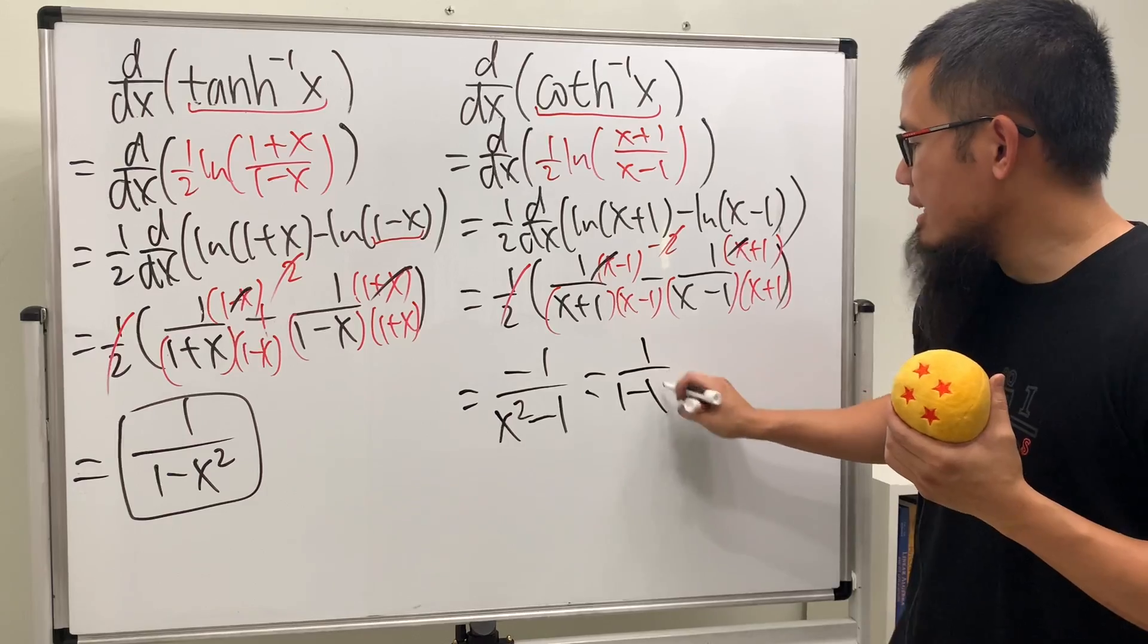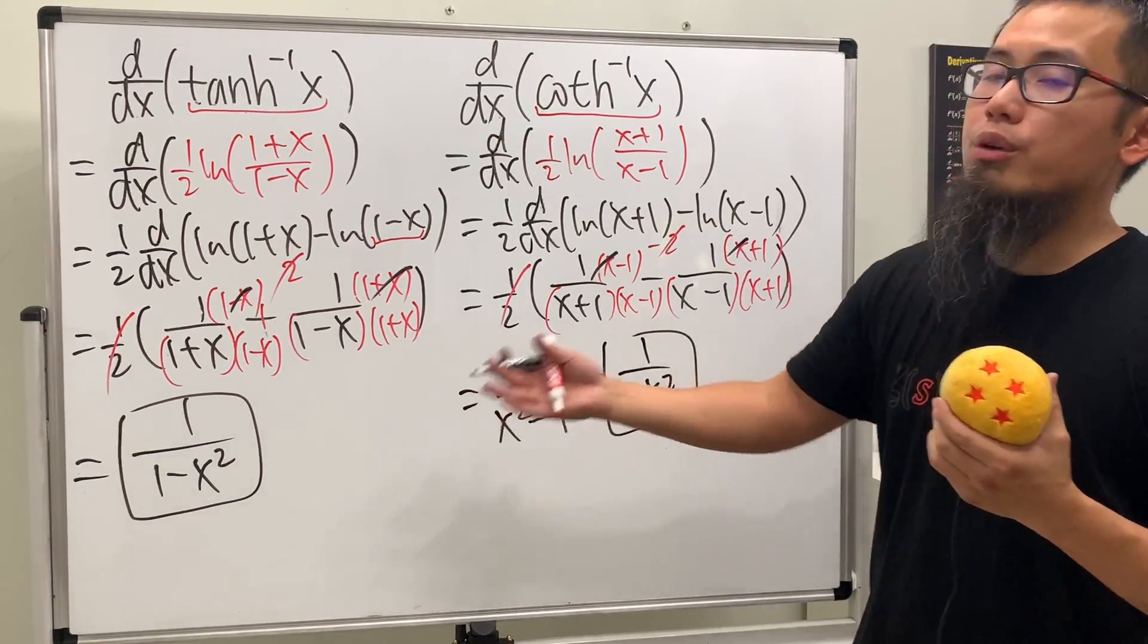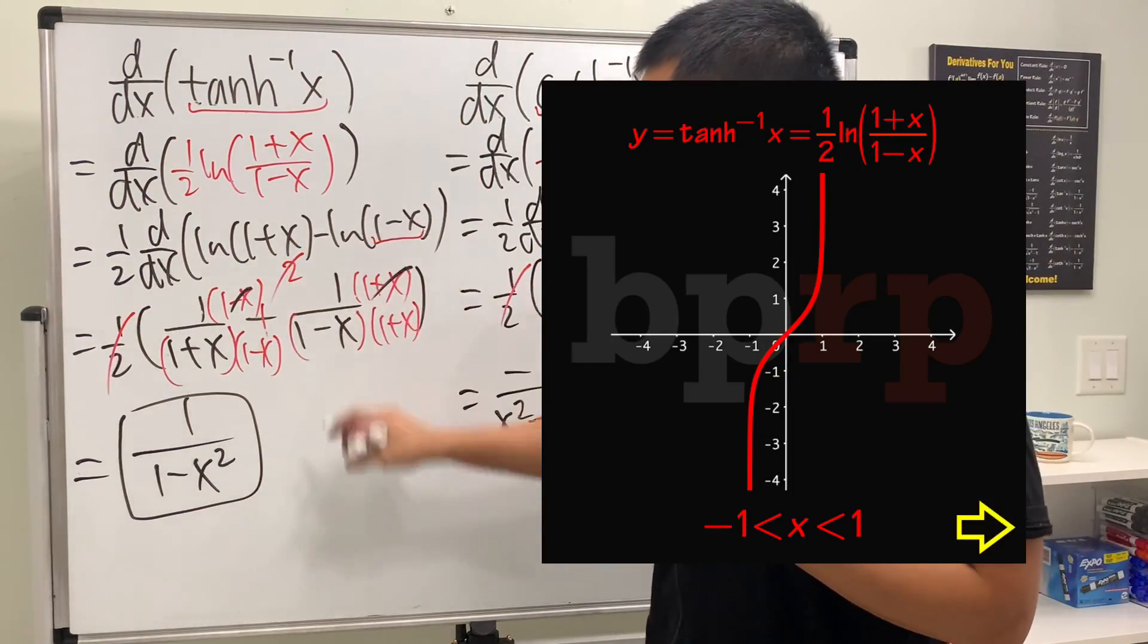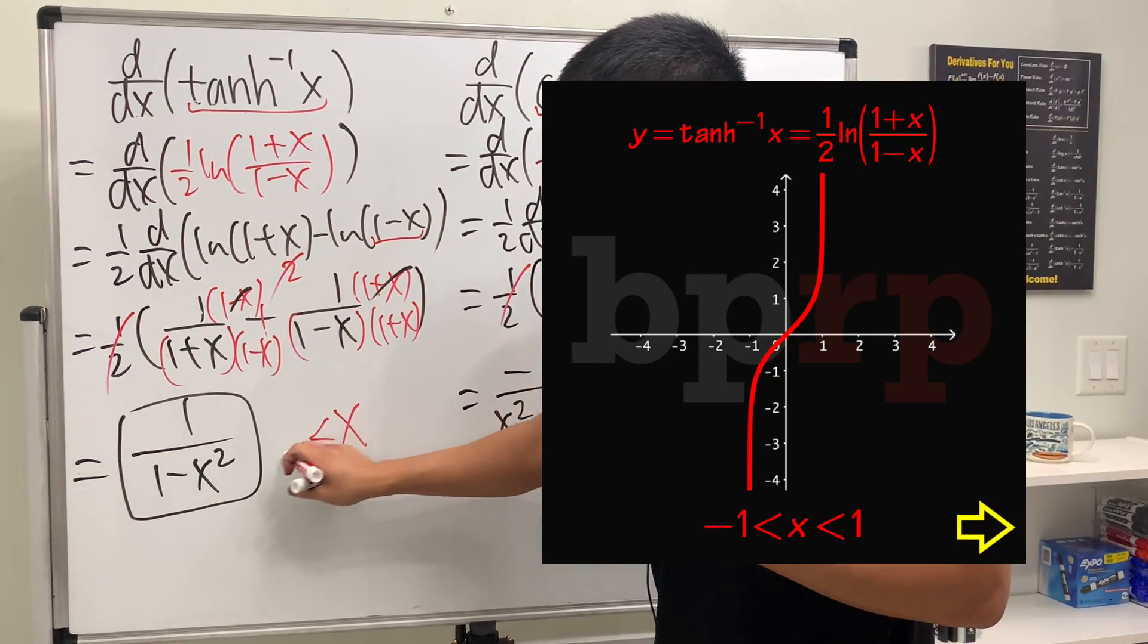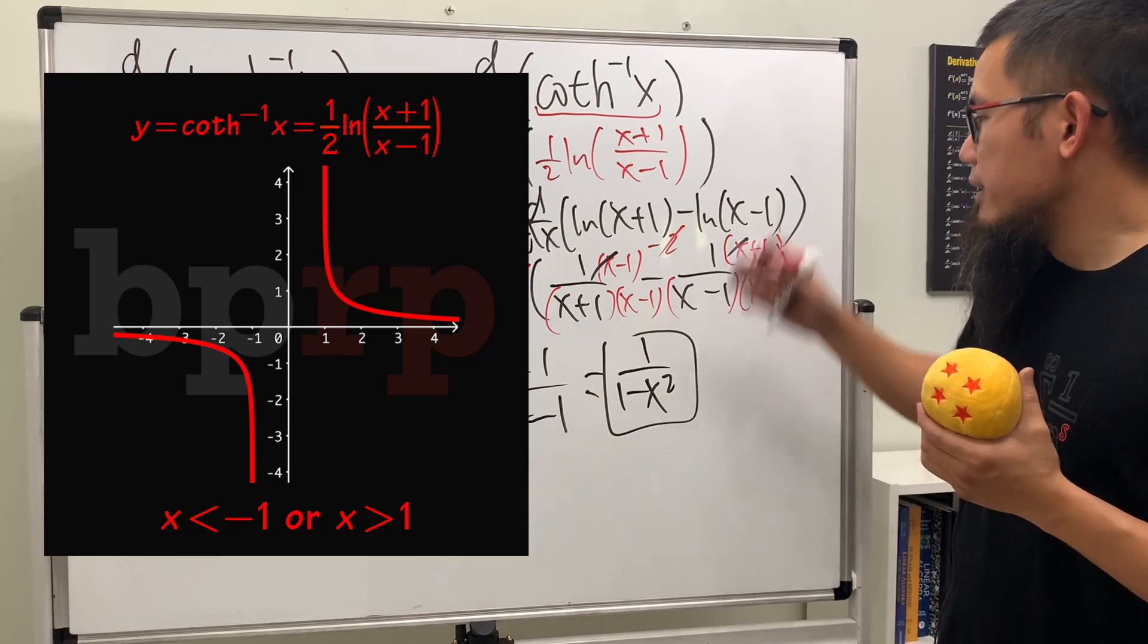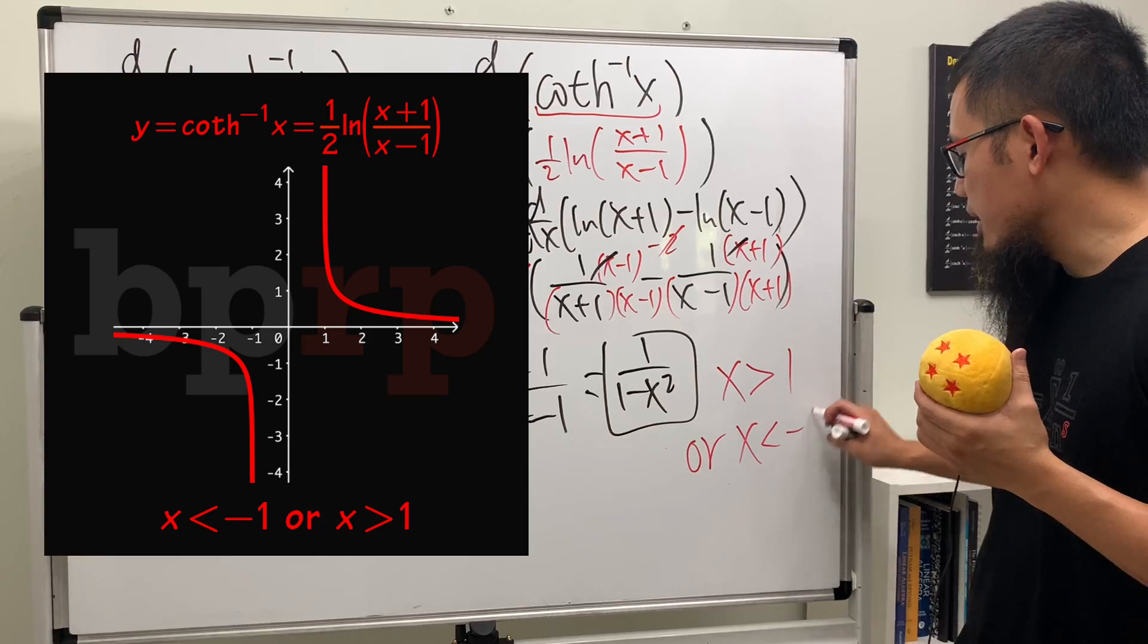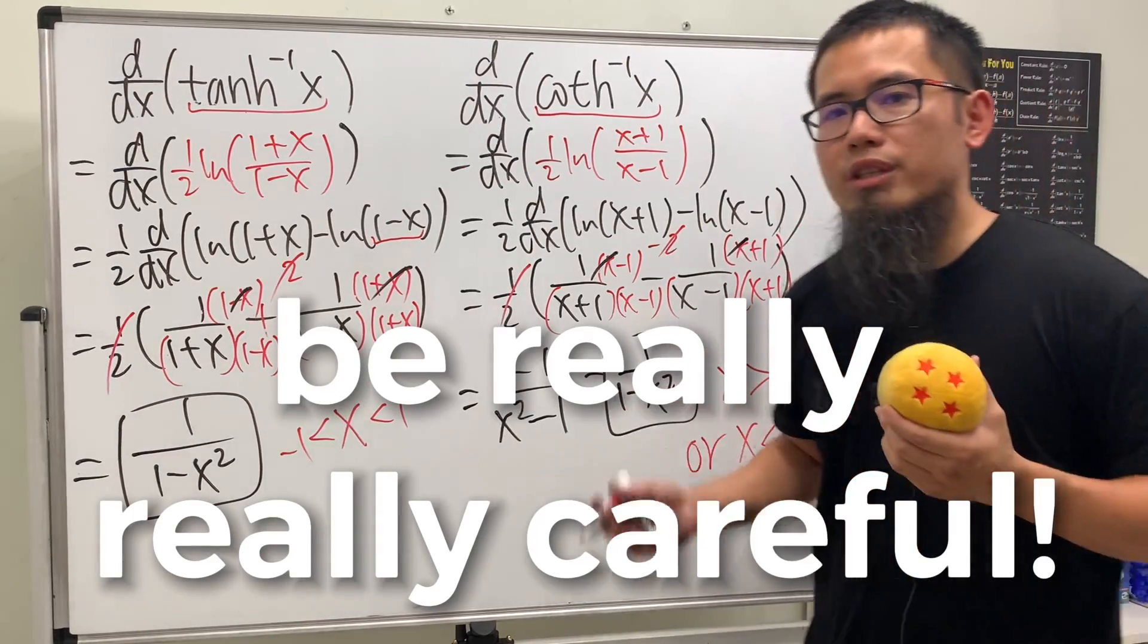So you see that they look the same, but what's the difference though? The domain is the issue. This is only good for when x is in between -1 and 1. This right here is good for if x is greater than 1 or if x is less than -1. So be really, really careful.